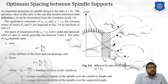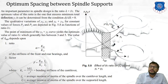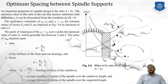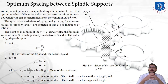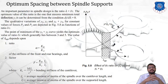An important parameter in spindle design is the ratio λ = L/c. The optimum value of this ratio is the one that ensures minimum total deflection y, determined from the condition dy/dλ = 0. The qualitative variation of y1, y2, and y1+y2 as a function of L/c shows that the minimum of the y1+y2 curve gives the optimum λ, generally lying between 3 and 5. The value of λ_optimum depends on: first, ratio α = k_b / k_a (stiffness of front to rear bearing); and second, factor F = k_b / k_c × I_c / I_L.